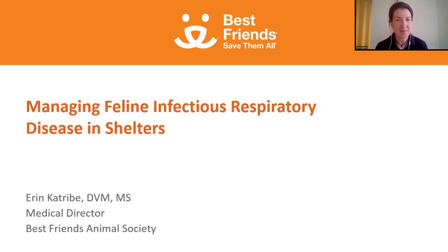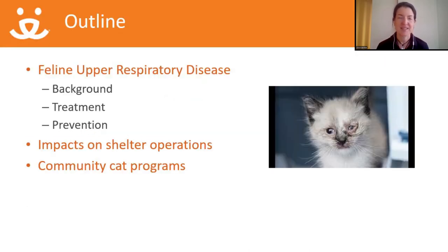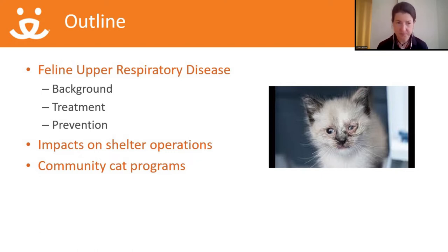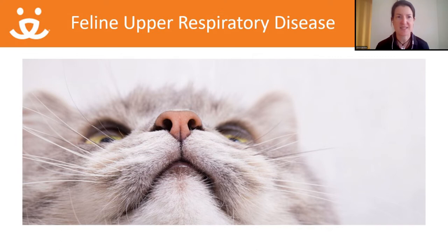I'm Dr. Erin Katry, and I'm medical director for Best Friends Animal Society. Thank you for tuning in. Now let's talk about preventing and reducing respiratory disease in our shelter cats. Here's our roadmap for today: we'll start with background on the disease and its causes, then treatment options, prevention — something attainable for any size shelter — shelter operational impacts, and finally impacts on community cat programming.